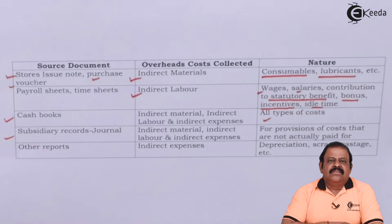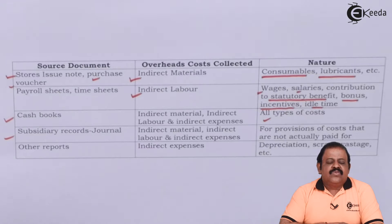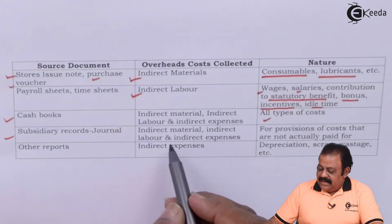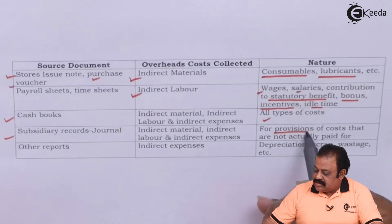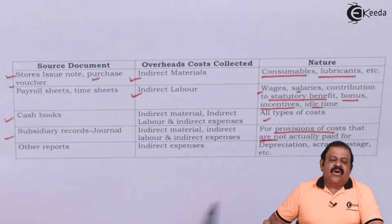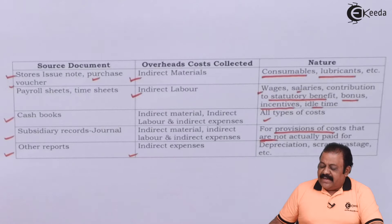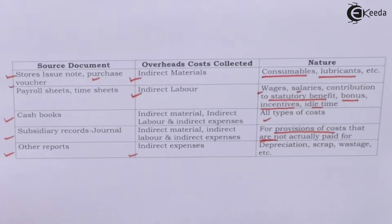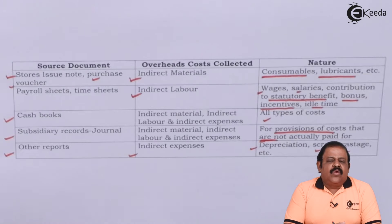There are also subsidiary records — journals — where expenses not actually paid in cash are recorded on a notional basis. We check those journal entries for indirect material, indirect labor, and indirect expenses that are recorded on a notional basis to arrive at the total cost of the product. Other reports, such as annual account statements, provide information on indirect expenses like depreciation, scrap, and wastage. These source documents serve as evidence for audit of those particular expenses.